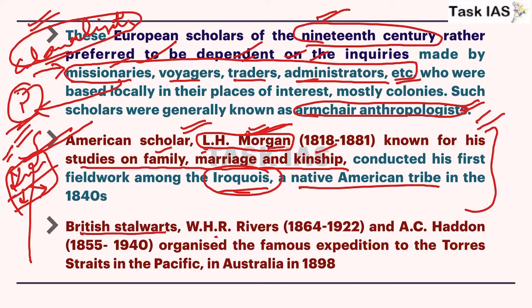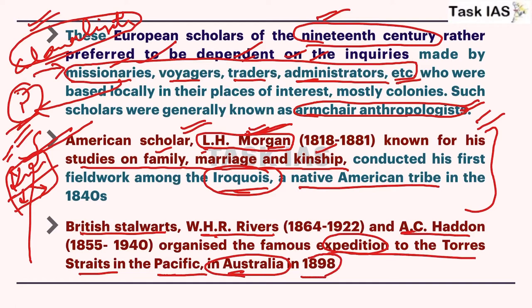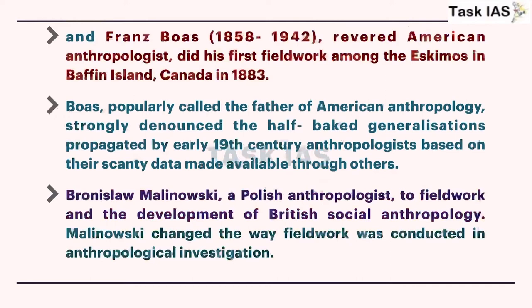Another contribution came from British stalwarts WHR Rivers and AC Haddon, who organized a famous expedition to Torres Strait in the Pacific, in Australia, in 1898. LH Morgan had worked in the 1840s, so you can remember these thinkers' names so that your answer will look more holistic.